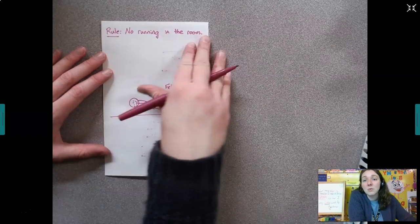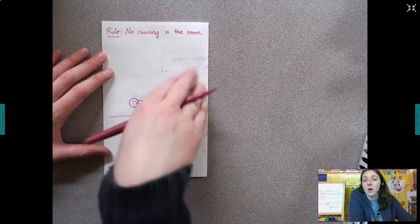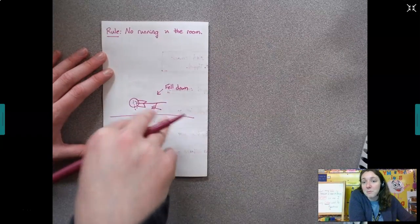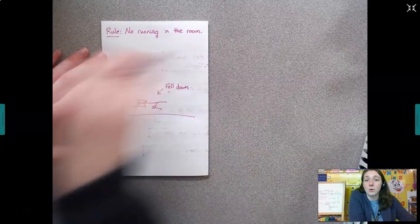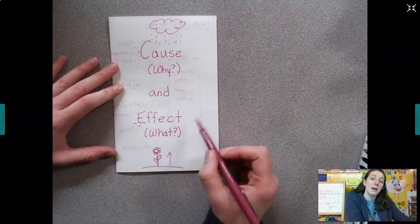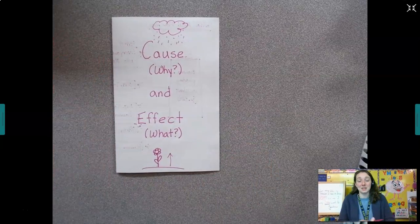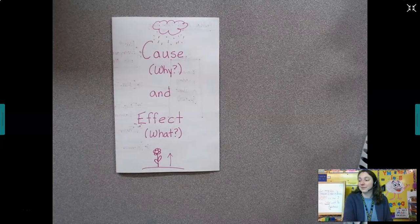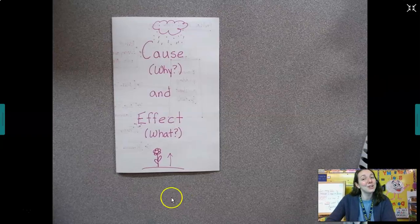So that's what I want you to do. It can be any rule you want, and then draw a picture of what would happen. What would be the effect if you did not follow the rule? So remember cause is the why something happens and effect is what happens because of that cause. So have a great rest of your day, friends.